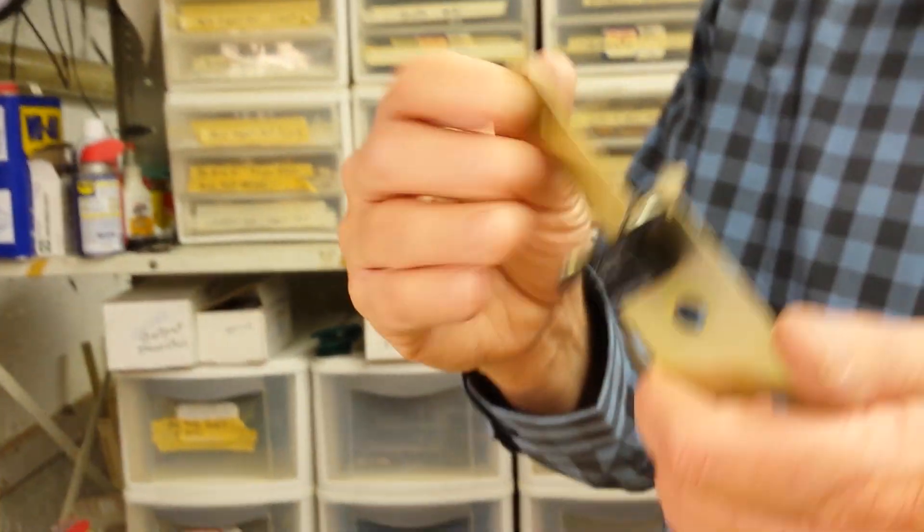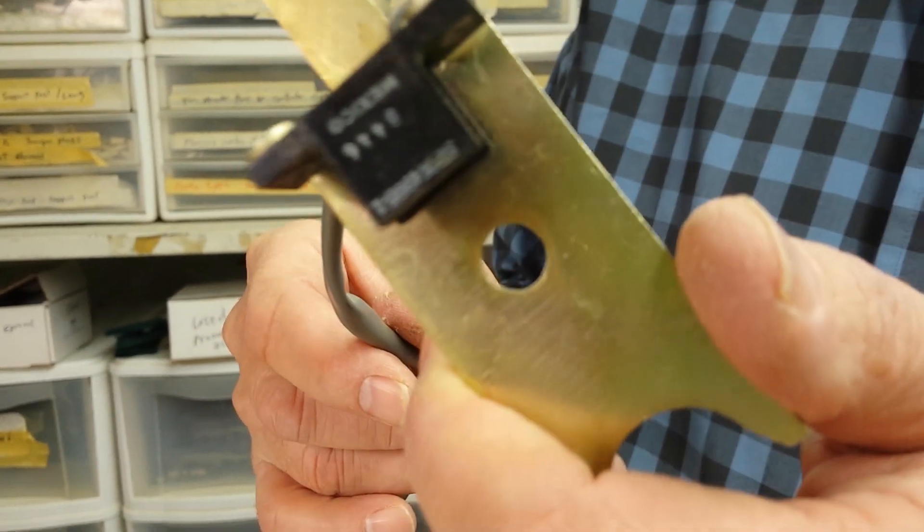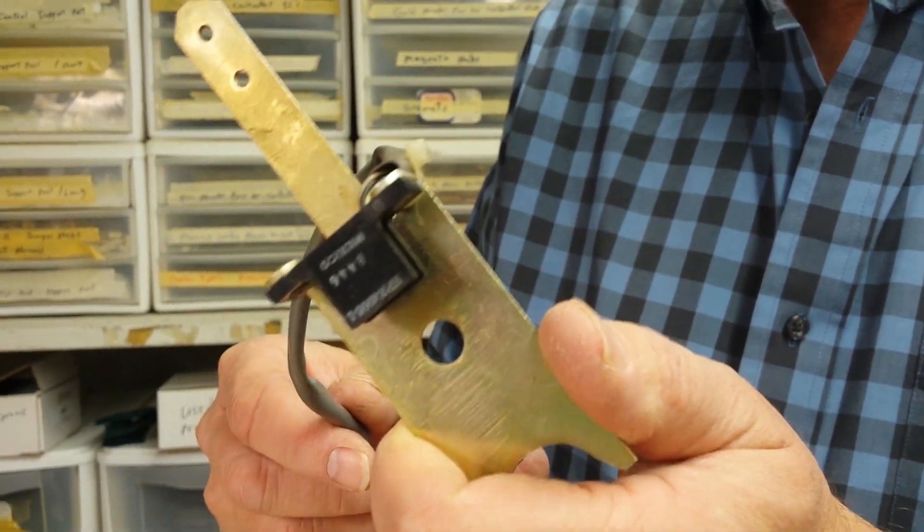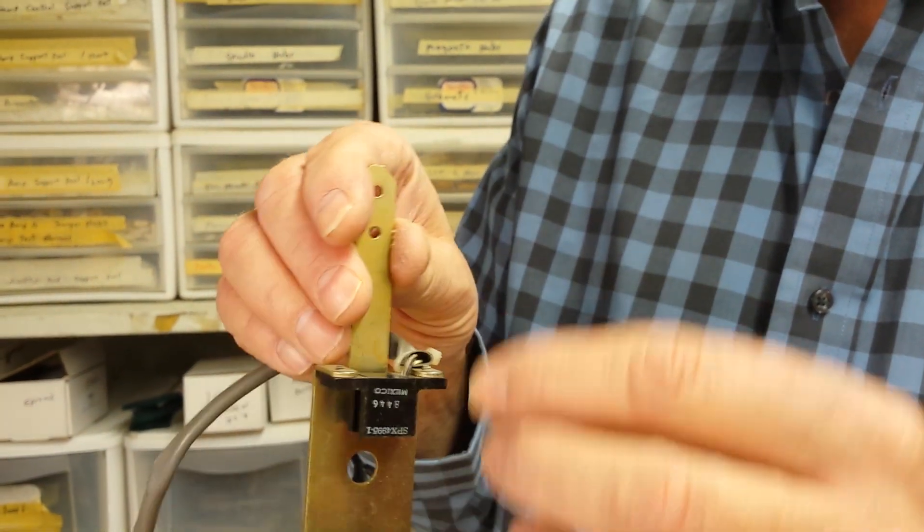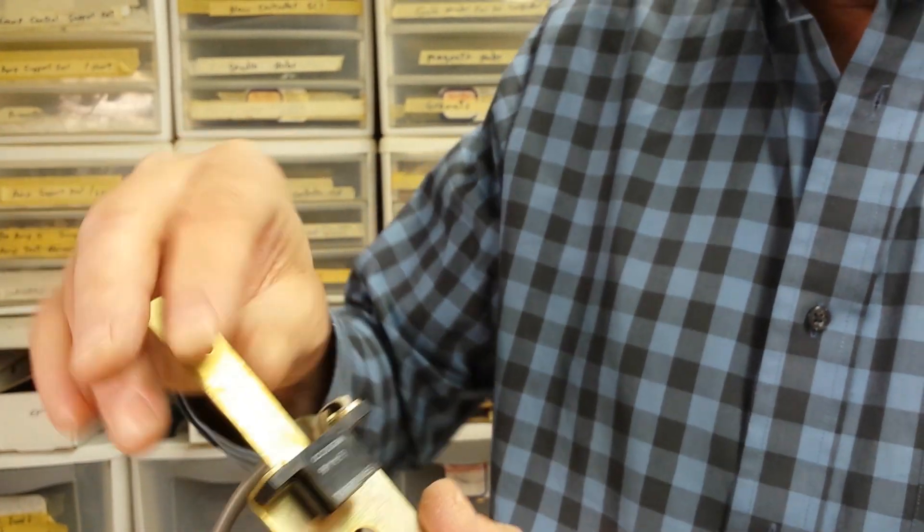And as far as removing the switch assembly from your jukebox, we have a video on how to remove an optical switch and how to install one. So this is not going to be on how to remove or install. This is just going to be on how to mount the new switch to the old bracket.